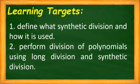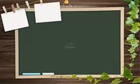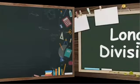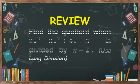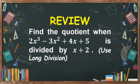So before we proceed with our synthetic division on how we can perform synthetic division, let's review the process of long division. As our example, we are going to find the quotient when 2x cubed minus 3x squared plus 4x plus 5 is divided by x plus 2, and we are going to use long division.